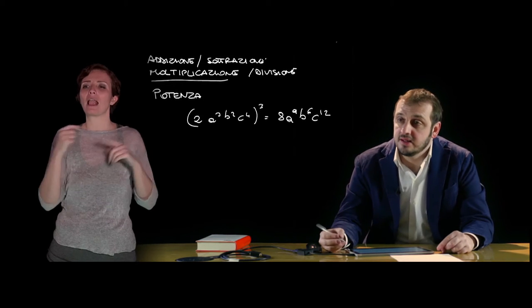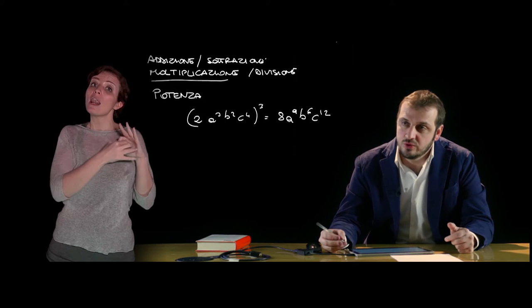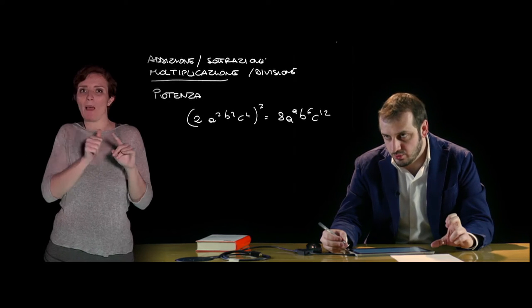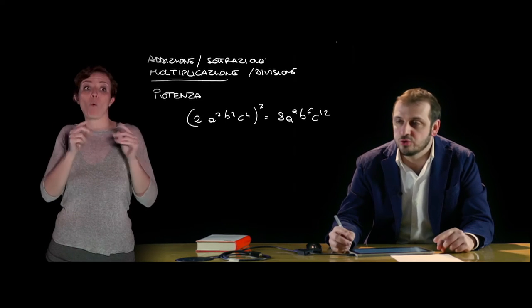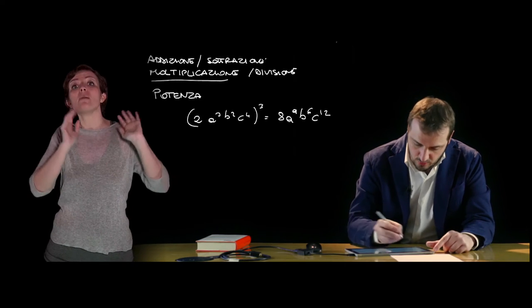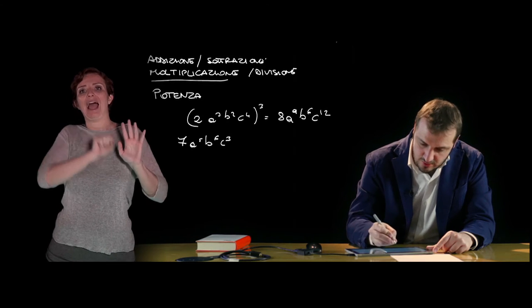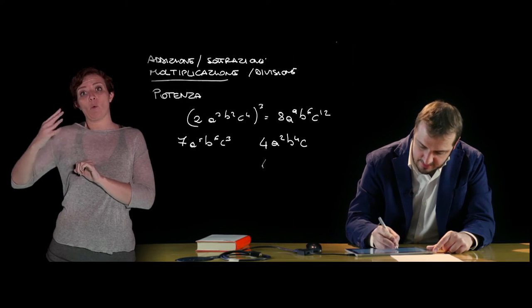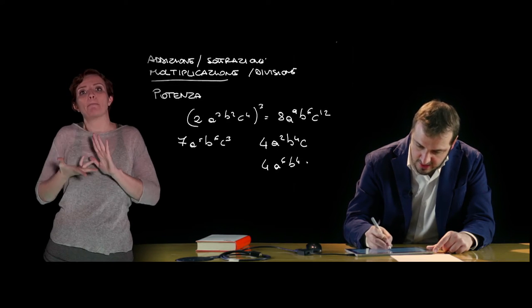Il concetto diverso è quello della divisione tra monomi, che richiama il concetto importante di divisibilità. Un monomio è divisibile per un altro — il primo monomio si chiama dividendo, il secondo al denominatore si chiama divisore — quando nel monomio dividendo compaiono tutte quante le lettere presenti al divisore ma con esponenti maggiori o uguali. Per esempio 7a alla quinta, b alla sesta, c alla terza è assolutamente divisibile per 4a alla seconda, b alla quarta, c, ma non è divisibile per 4a alla sesta, in quanto 6 è maggiore di 5 per quanto riguarda a.